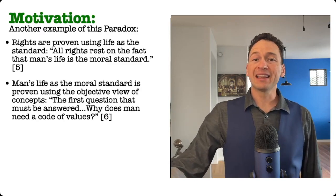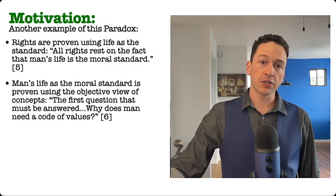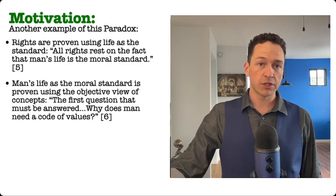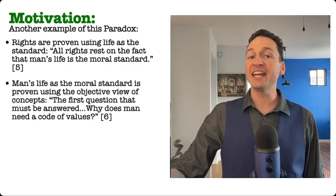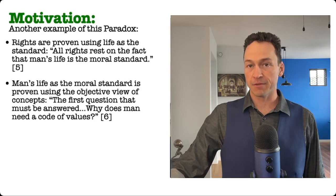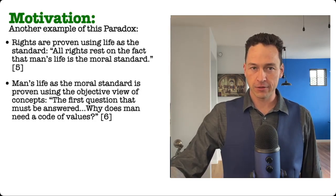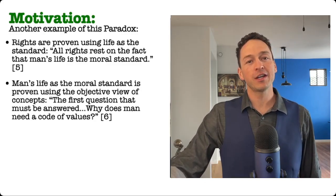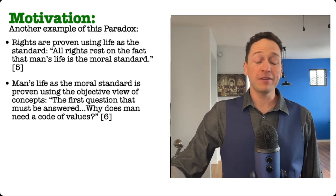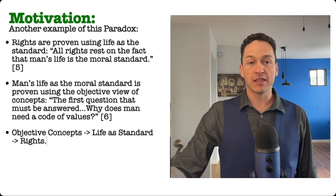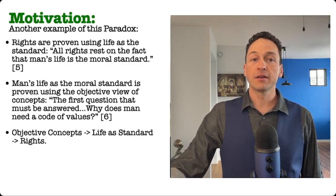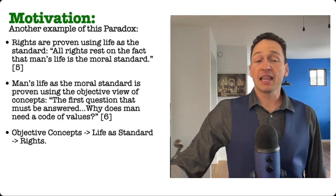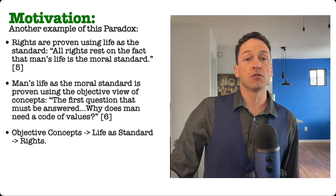Going further, the principle that life is the standard is often thought of as proven, in part, using the idea that concepts are objective. When presenting the argument for her ethics, Ayn Rand writes, quote, the first question that must be answered as a precondition of any attempt to define, to judge, or to accept any specific system of ethics is, why does man need a code of values, unquote. She does not assume that the concept of ethics is valid, then state what she feels is good. She instead starts by giving the evidence in reality that we even need a concept of ethics. So the egoist ethics seems to rely on the idea that concepts are objective. So many will say that the proof of rights relies on the idea that life is the standard of value, and that life is the standard of value relies on the objectivity of concepts. This is the order of proof, some will say.